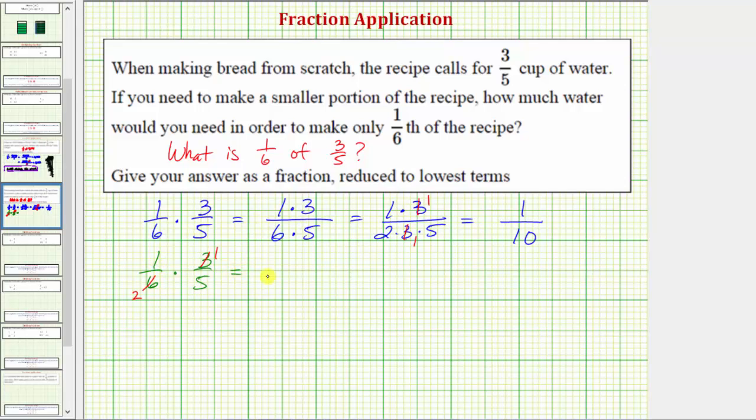Notice here, in the numerator we'd have one times one, which is one, and the denominator would be two times five, which equals ten. So either method does work. We now know that one-sixth of the recipe calls for one-tenth of a cup of water.